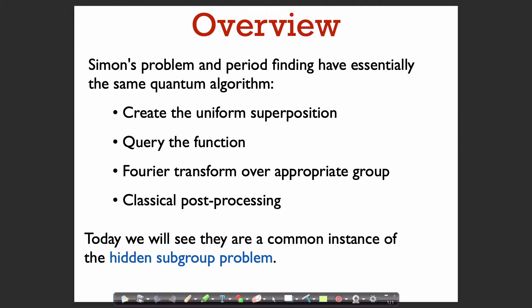In Simon's problem that group was Z_2^n, and in the period-finding problem that was the group of integers modulo n. The only place where these algorithms really differed was after the quantum part, in the classical post-processing. The quantum part was essentially exactly the same — we just used the appropriate Fourier transform for the group we're working over.